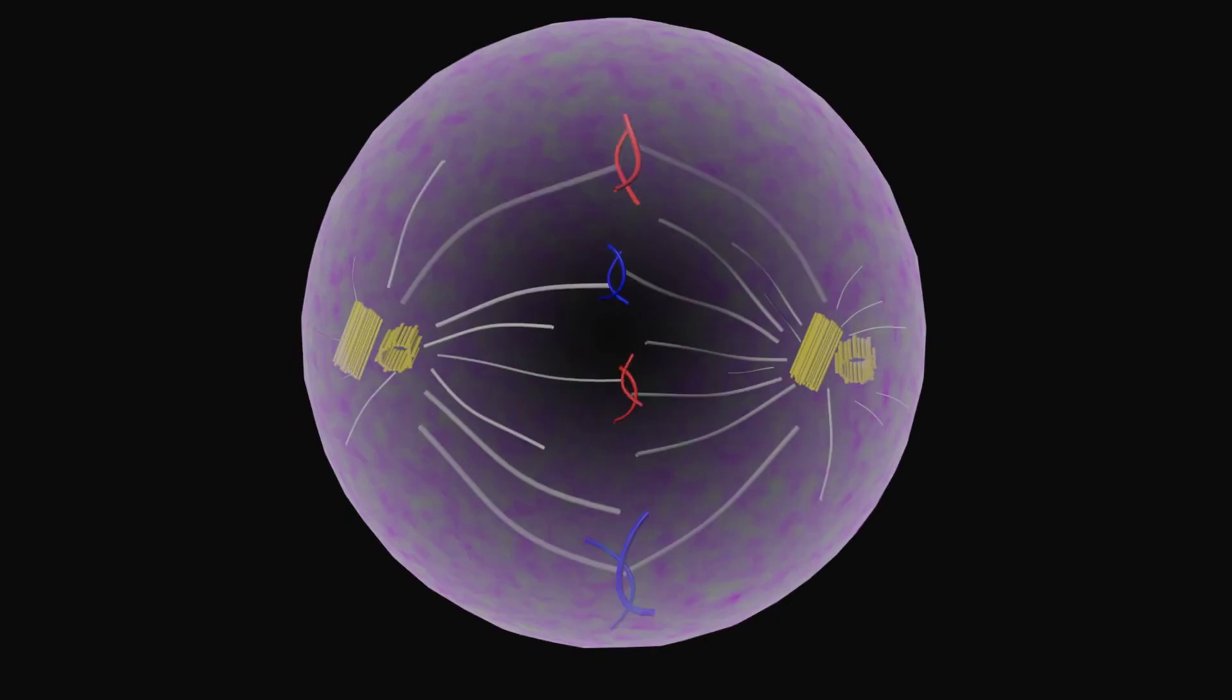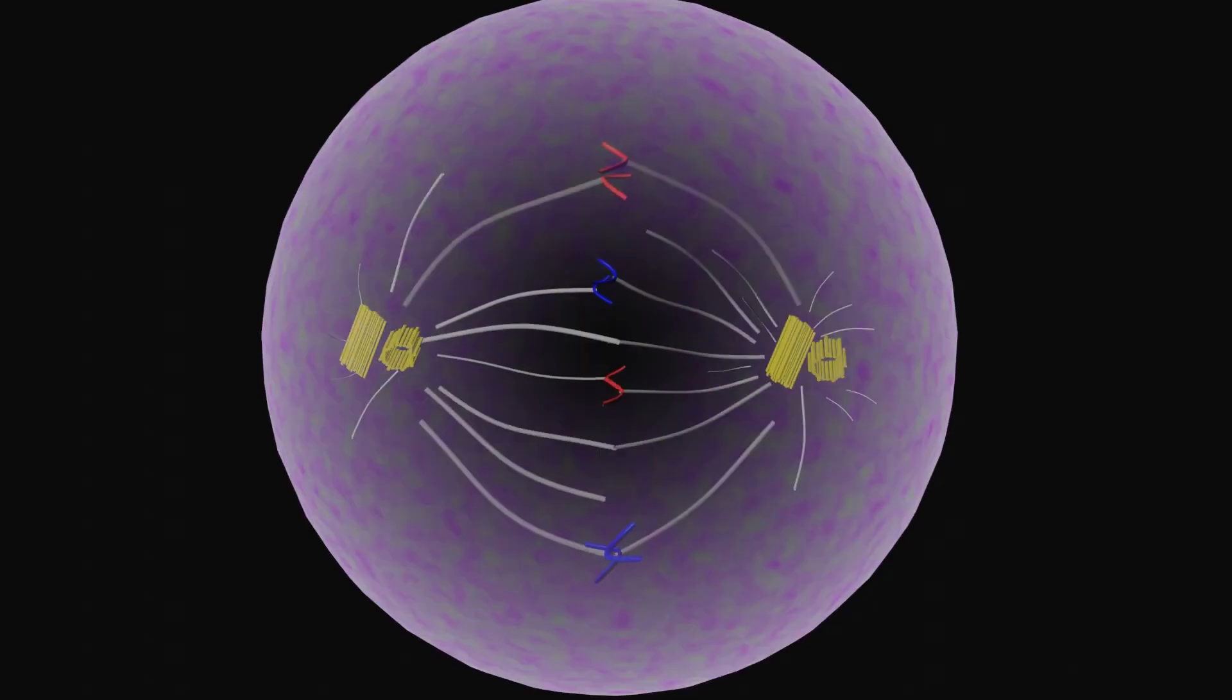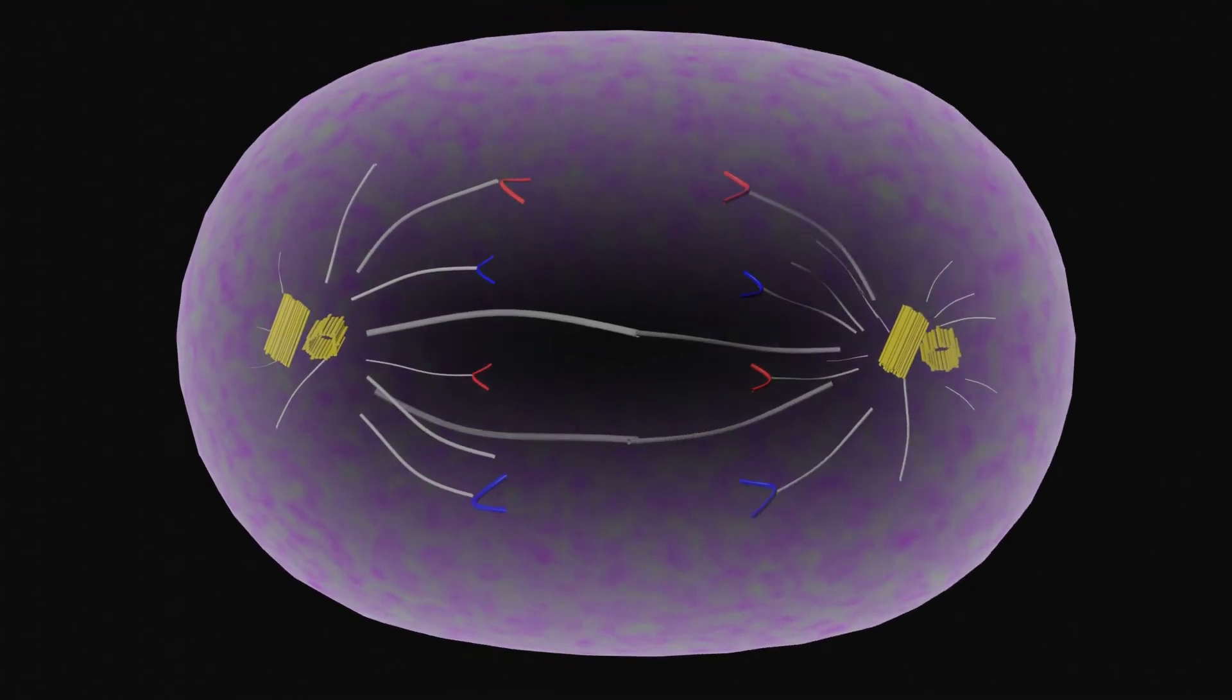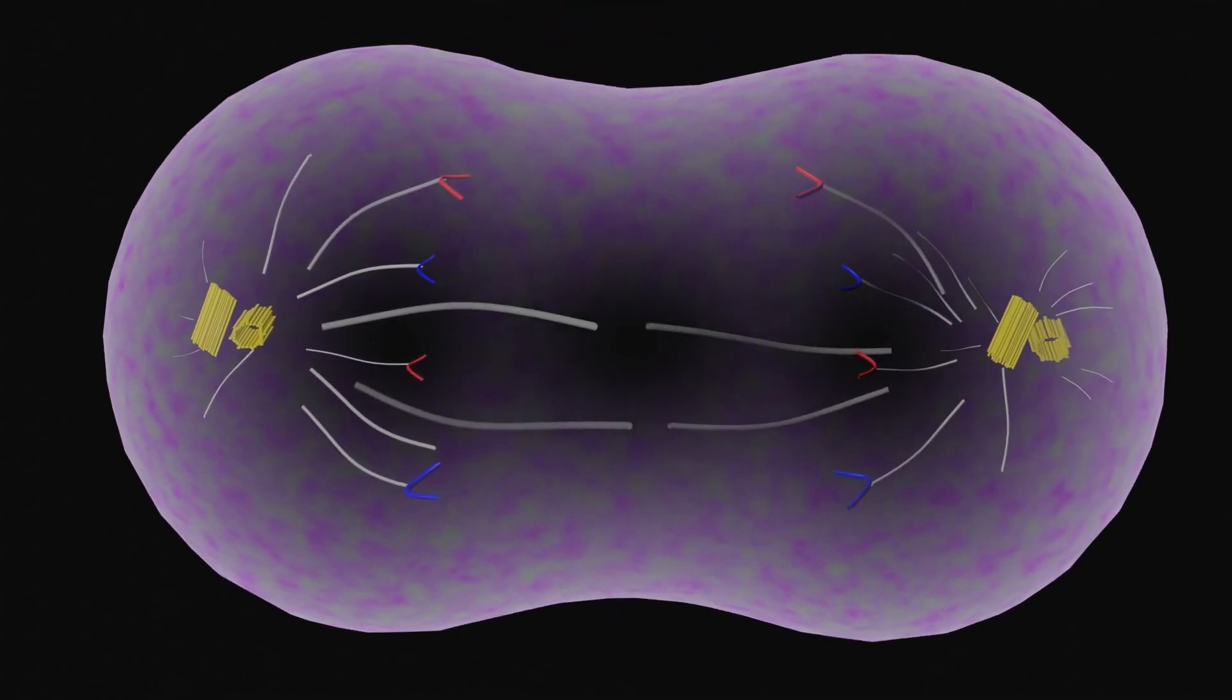At anaphase, the splitting of the sister chromatids occurs. The chromosomes are then pulled towards the pole. The centromere of each chromosome leads at the edge while the arms trail behind it.